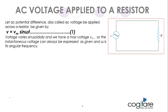Voltage varies sinusoidally and we have a maximum voltage Vm. The instantaneous voltage is expressed as V = Vm·sin(ωt), and ω is the angular frequency — the number of revolutions per second, essentially frequency in Hz.